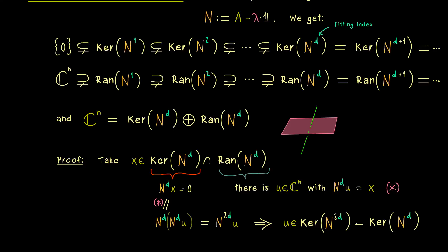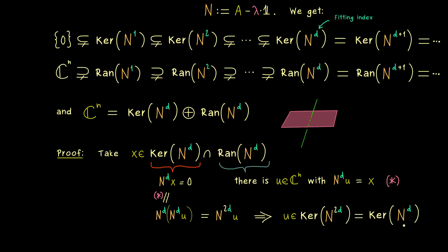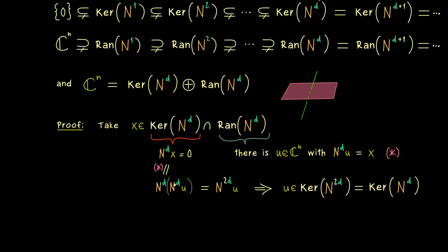Hence nothing will change here, and it's actually the same kernel as the one of N to the power d. This means, if we apply N to the power d to u, we get out the zero vector.